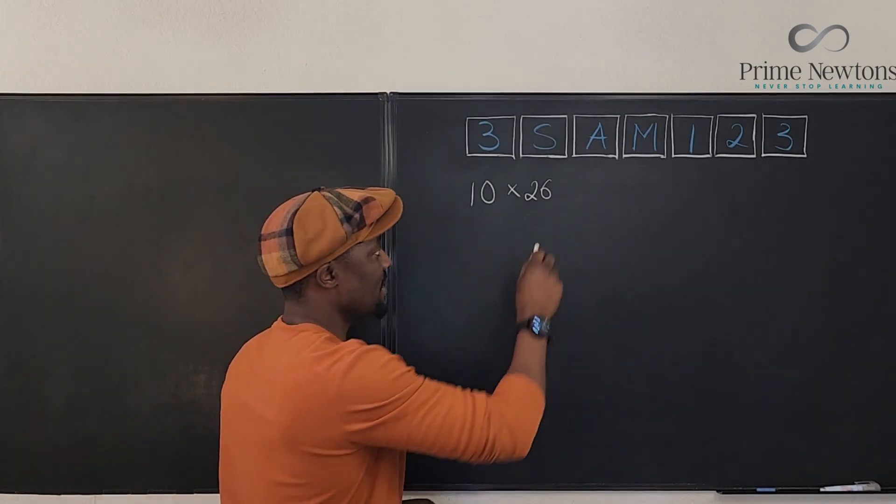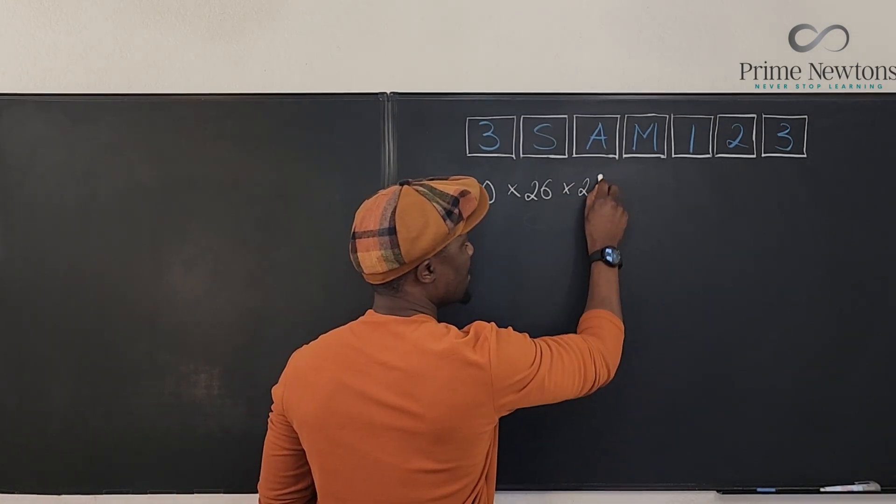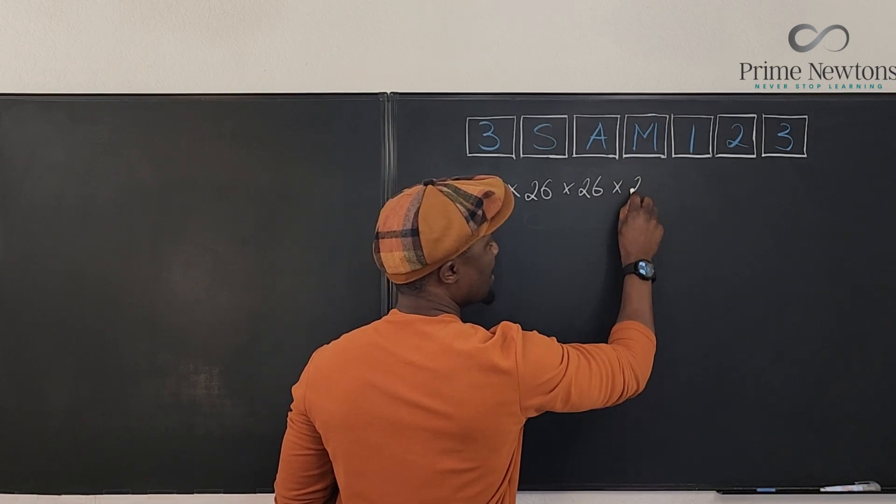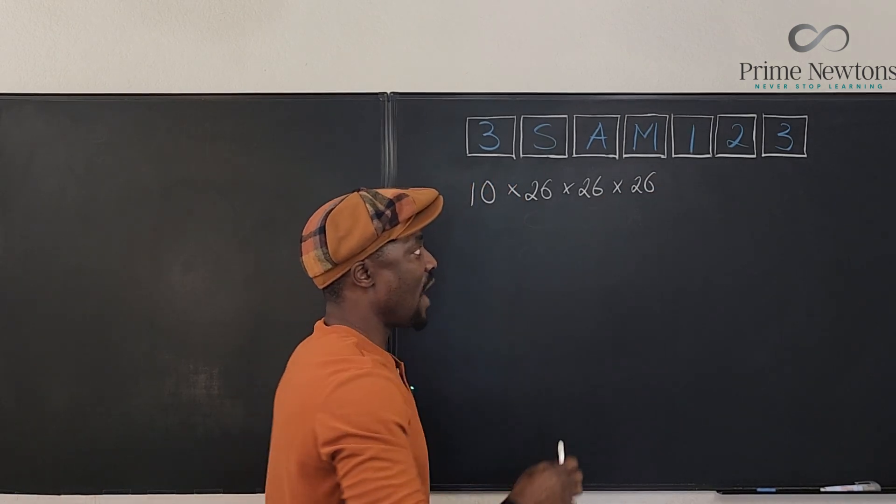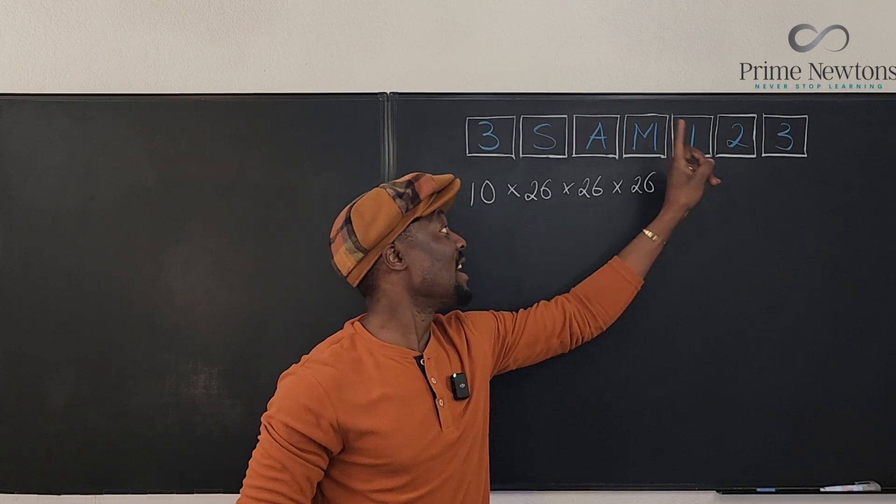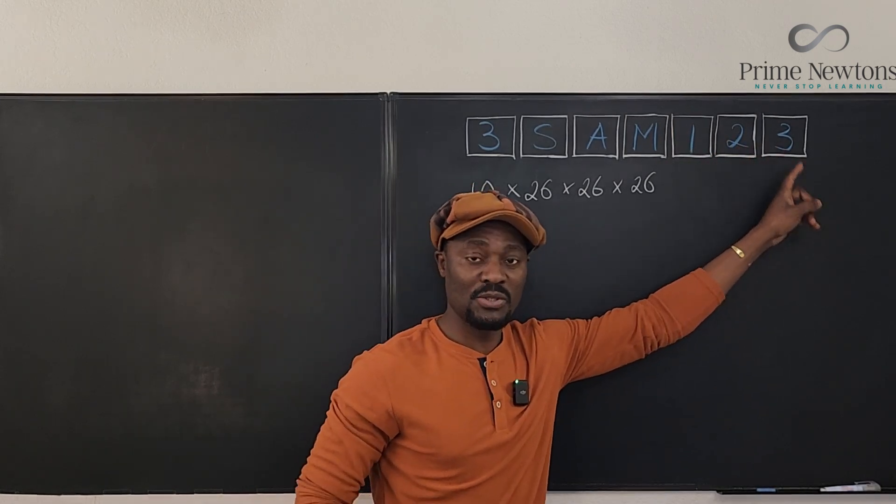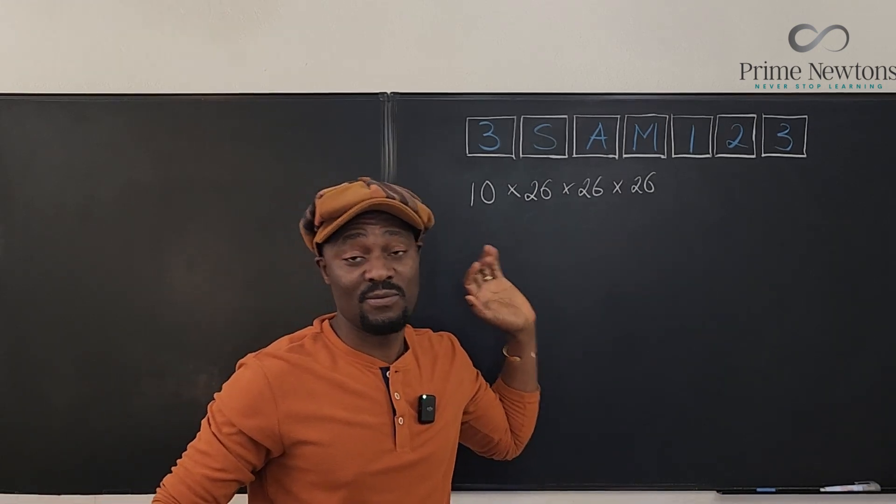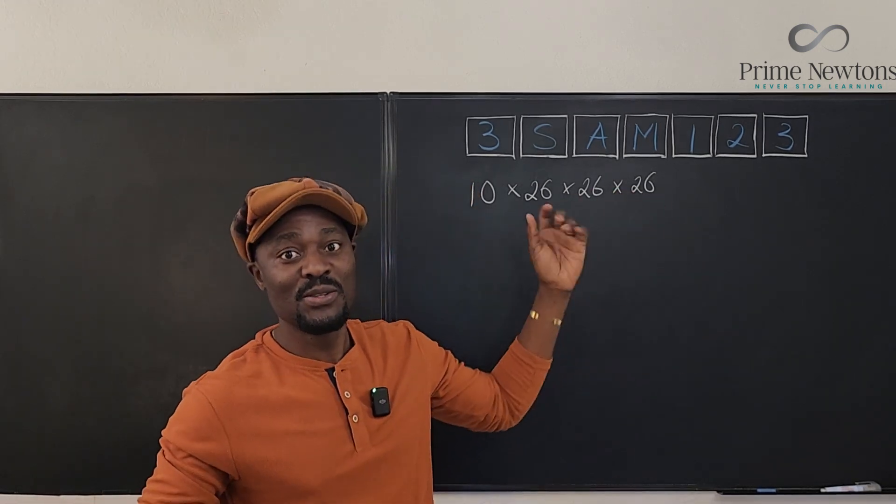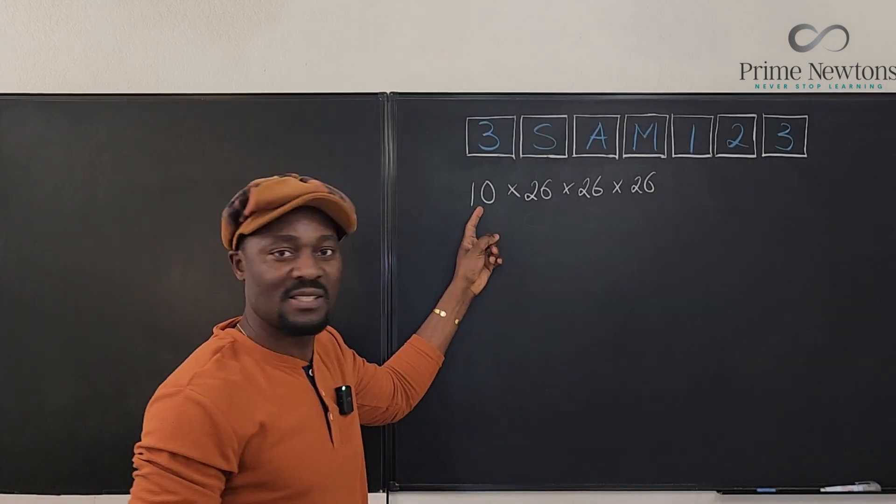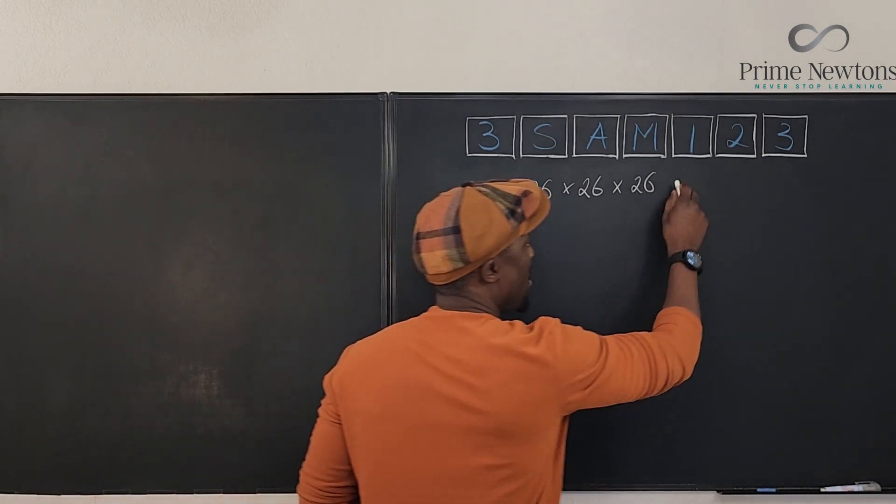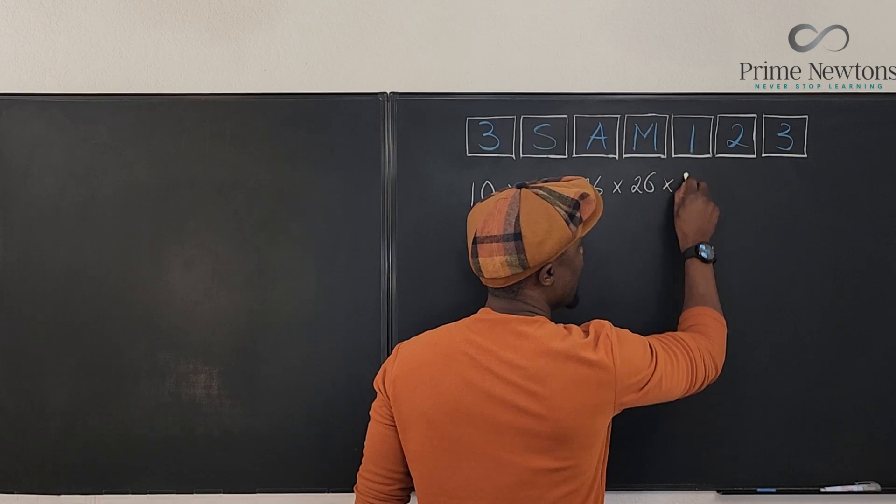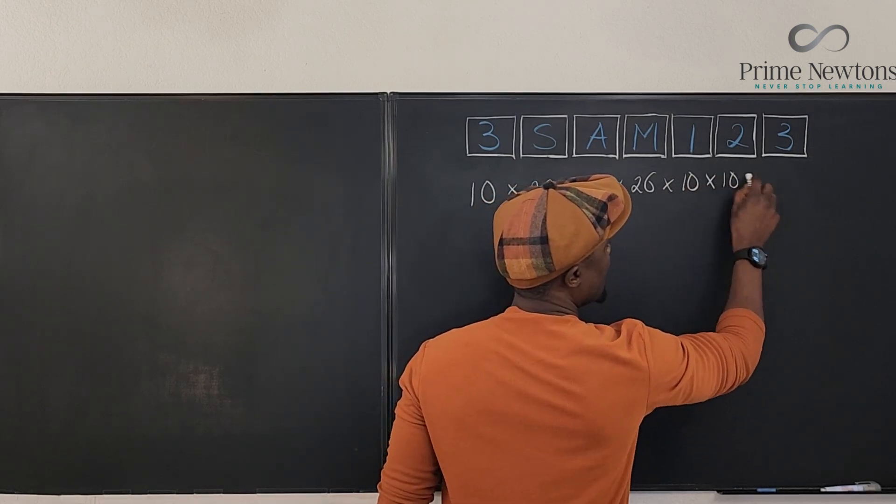The same thing for the next position - it's 26. The same here, it's 26. Now when you get here, you just need an option here, an option here, an option here, because you're allowed to repeat numbers. You can have one, one, one. You can have two, two, two, three, three, three. So it's just gonna be the same number of options we have in the first box - times ten, times ten, times ten.